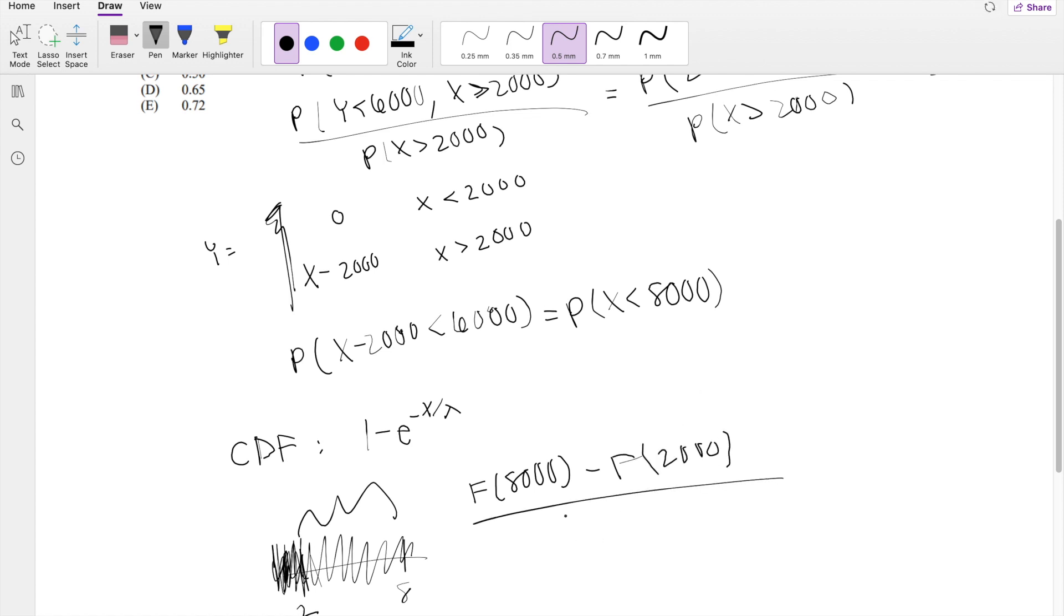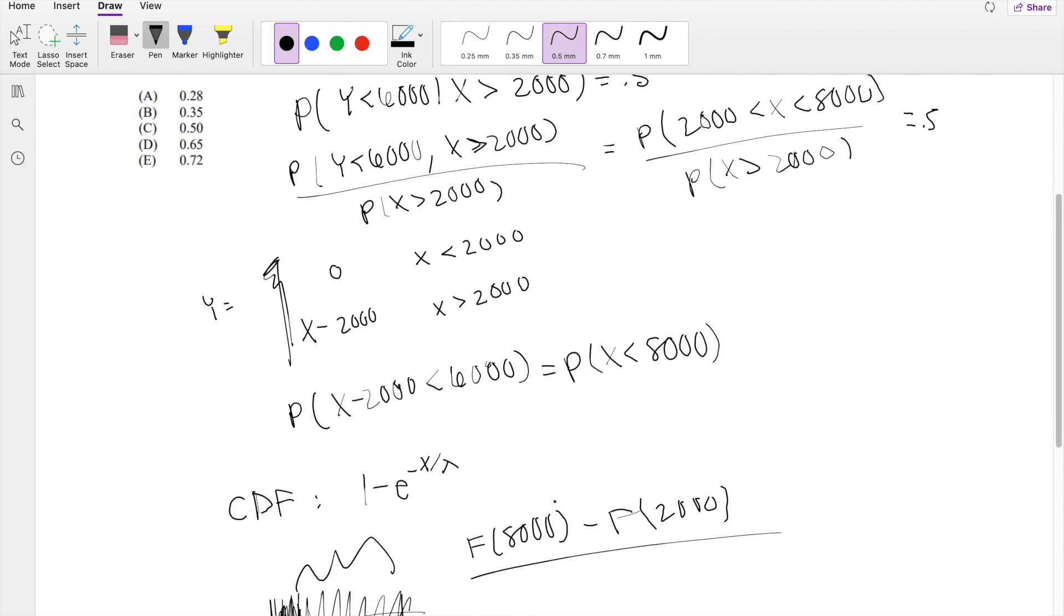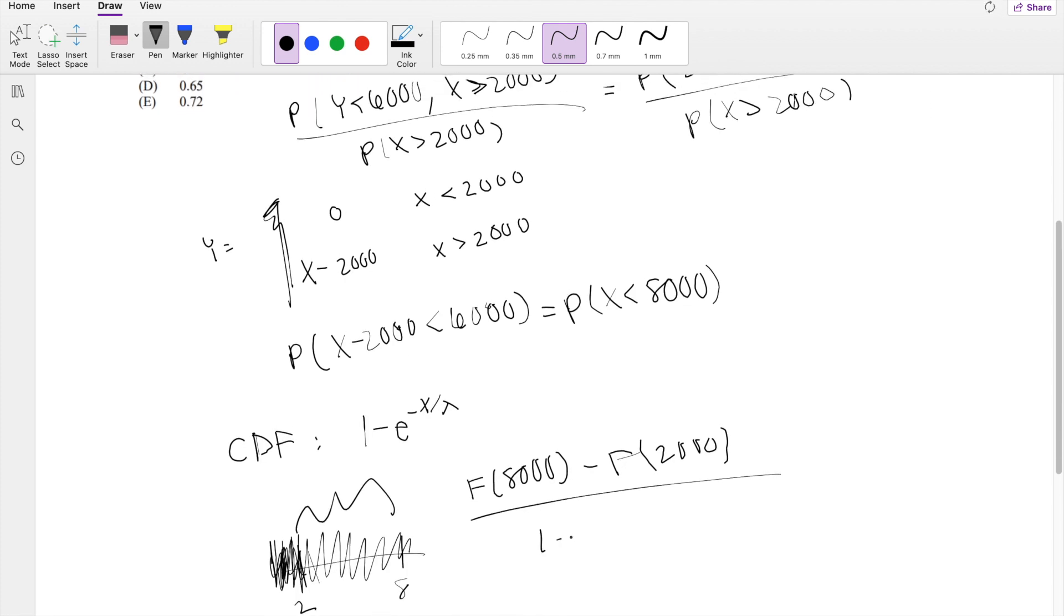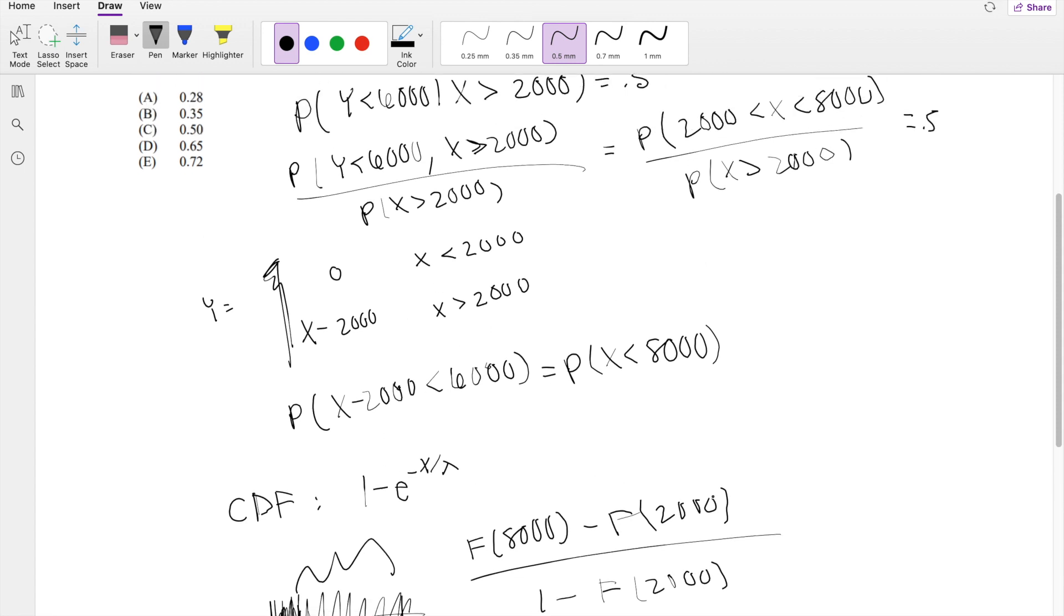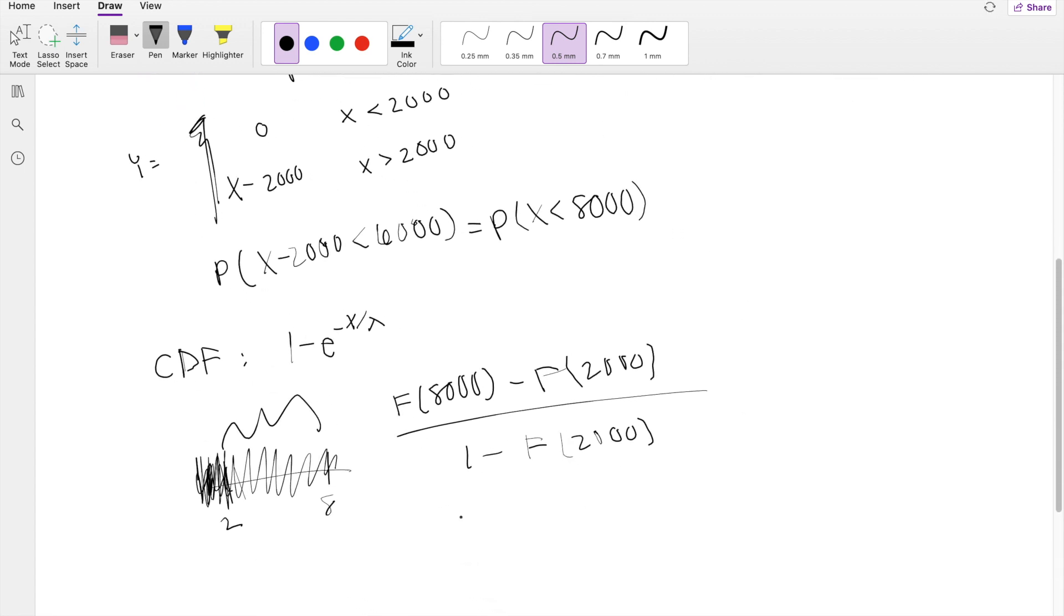Divided by, if we're looking for X is greater than 2,000, that's just basically 1 minus the F of 2,000, the complement.